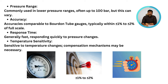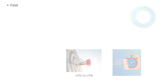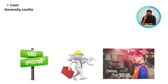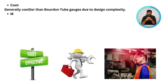Response time is generally fast, quickly responding to pressure changes. Sensitivity to temperature changes may require a compensation mechanism. Generally it is costlier than the Bourdon tube type of gauges due to design complexity.